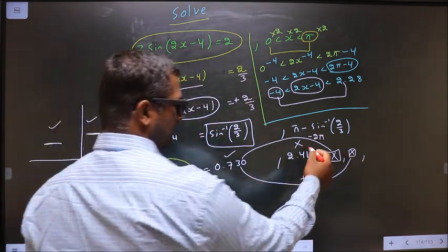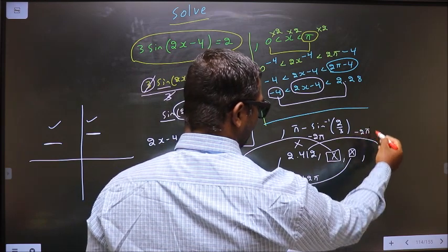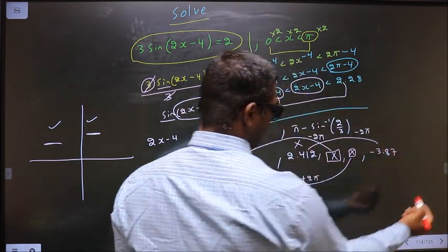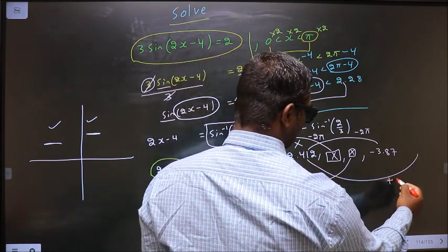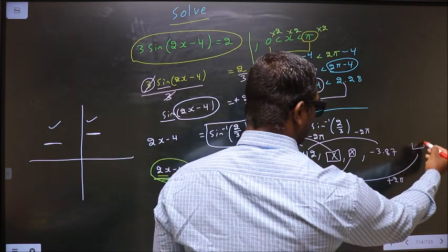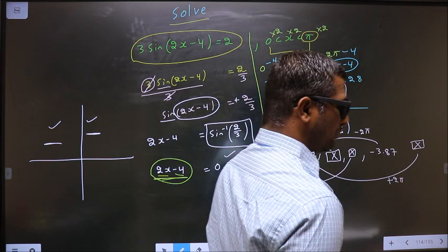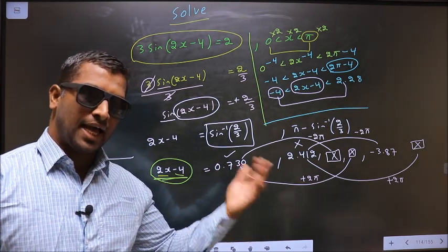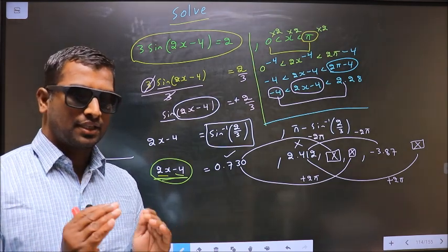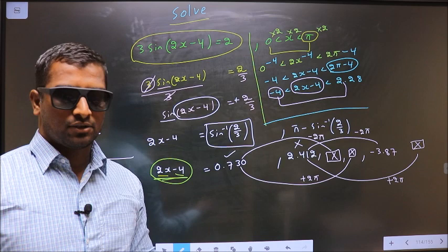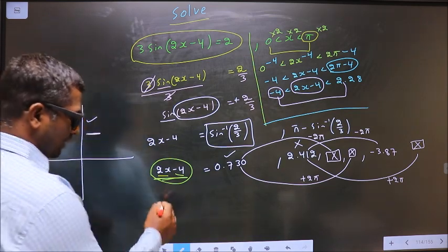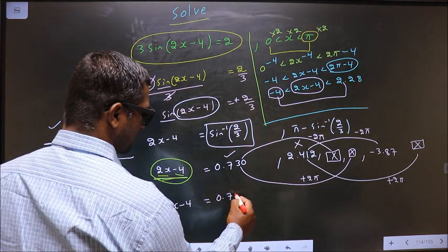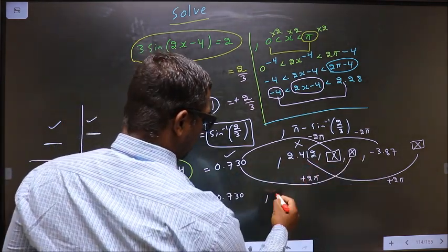Now come to this. If I subtract 2π from this, I get -3.87. If I add 2π to this, I get a value that is not in this interval. To get more angles, either you add 2π or subtract 2π. It depends on the interval, whether to add or whether to subtract or whether to do both. So now angles in the interval for 2x - 4 we got are 0.730 and -3.87.